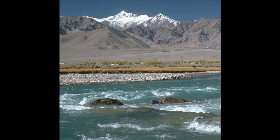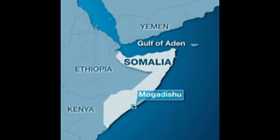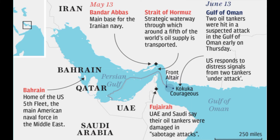The Arabian Sea has two important connected waterways: the Gulf of Aden in the west, connecting it to the Red Sea through the Strait of Bab-el-Mandeb, and the Gulf of Oman to the north, connecting it to the Persian Gulf.